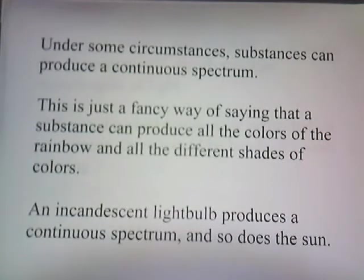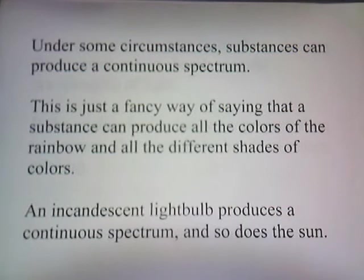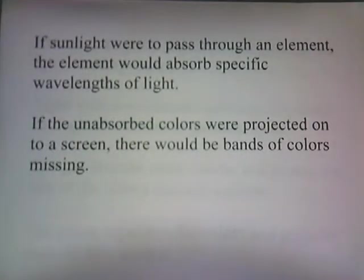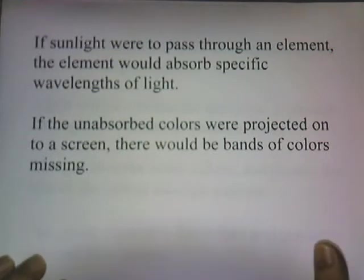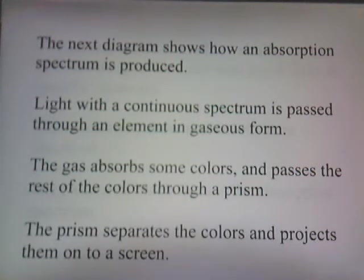Under some circumstances, substances can produce a continuous spectrum — meaning the substance can produce all the colors of the rainbow and all the different shades of color. An incandescent light bulb produces a continuous spectrum, and so does the sun. Now, if sunlight were to pass through an element in the gaseous state, the element would absorb specific wavelengths of light. If the unabsorbed colors were projected on a screen, there would be bands of color missing. Light with a continuous spectrum is passed through an element in gaseous form, the gas absorbs some colors, and the rest pass through a prism which separates them onto a screen.